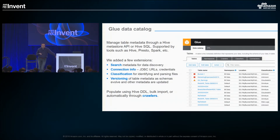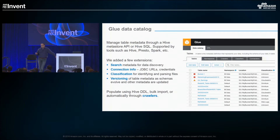We've added some extensions. You can search it, supply connection information to JDBC sources, and do classification for identifying and parsing files. You can version your metadata, because metadata changes. Those are all basic, fundamental bread-and-butter features for a catalog.